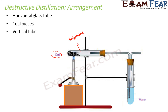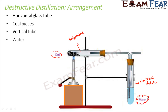We also need a vertical tube, as you can see here. The two tubes are arranged so that they are connected to each other — this glass pipe connects the horizontal tube with the vertical tube. We take some water in the vertical tube, and we need a burner to heat the coal. That's all we need to carry out destructive distillation of coal.